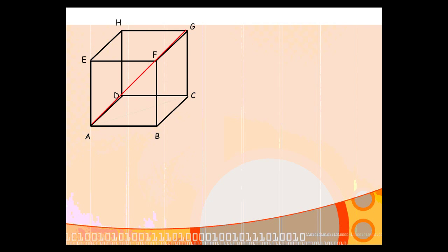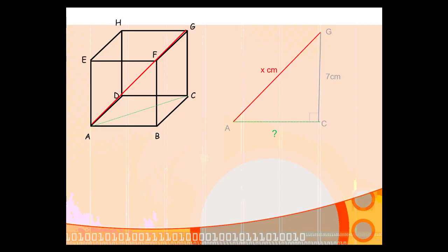What we need to do is isolate a right-angled triangle. If we consider the triangle ACG, A to G is the side we're looking for, and A to C is the side we need to find. G to C is the side we know — 7 centimeters. If we call the hypotenuse of the triangle X, we know GC is 7. But we come up against a stumbling block: we cannot find the hypotenuse AG unless we first find the side AC.